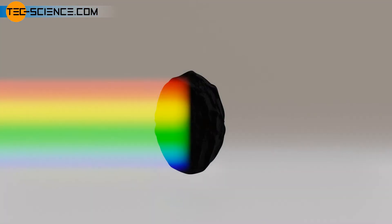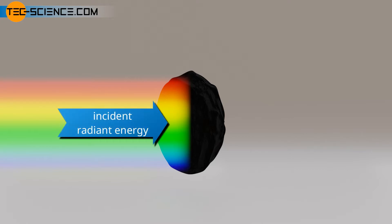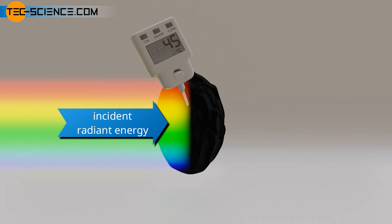One could now jump to the conclusion that a blackbody does not emit any electromagnetic radiation. From an energetic point of view, however, this conclusion is quickly disproved. Electromagnetic radiation is always associated with a certain radiant energy. The shorter the wavelength of the radiation, the more energetic it is. If radiant energy is absorbed by an object, as is the case with a blackbody, then the absorbed energy cannot just disappear. Rather, the absorbed energy becomes noticeable in an increase in the temperature of the object — an increase in internal energy, to be precise.